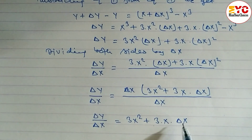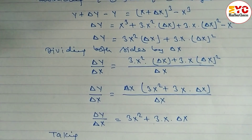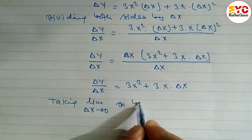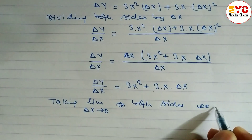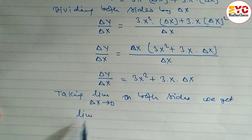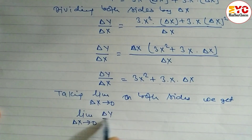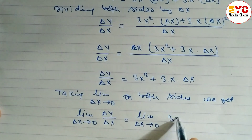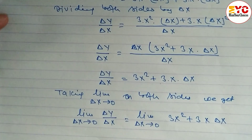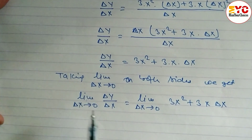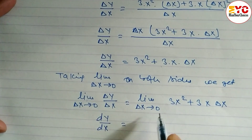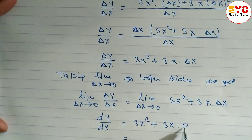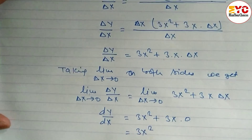Now we have to take the limit on both sides. Taking limit del x tends to 0 on both sides, we get: limit del x tends to 0 of del y by del x is equal to limit del x tends to 0 of 3x squared plus 3x del x. In the place of del x we substitute 0, so dy by dx is equal to 3x squared plus 3x times 0, which gives us dy by dx is equal to 3x squared.